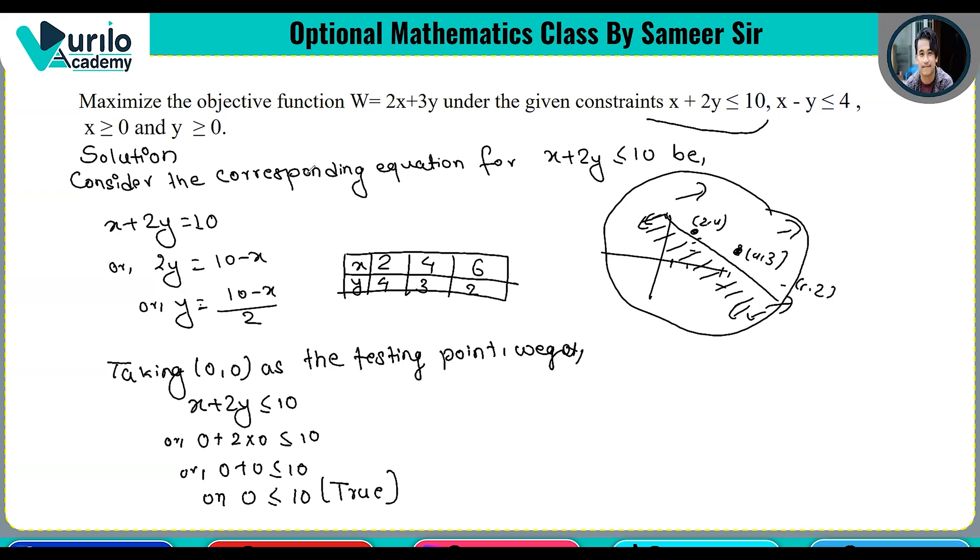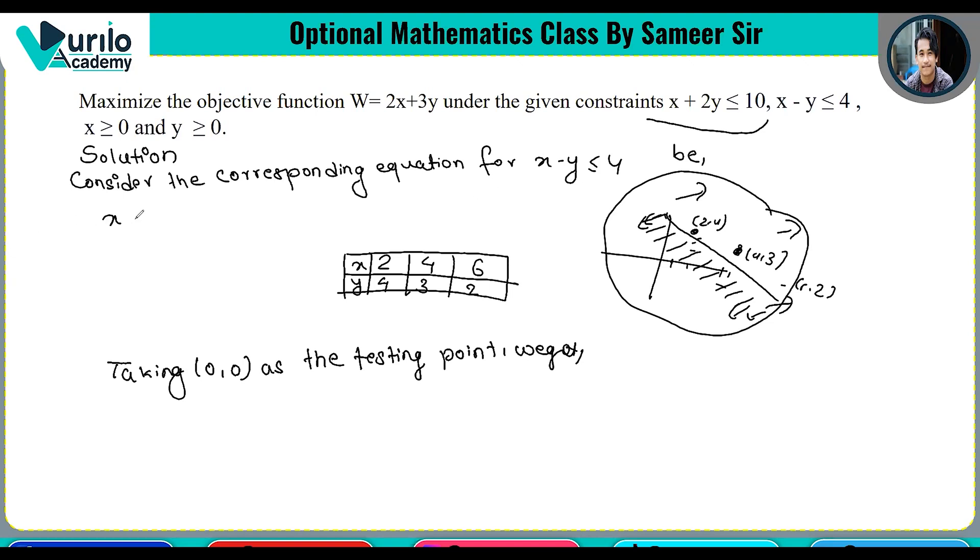Now let's do the same for the second constraint: x minus y is less than or equals to 4. The corresponding equation is x minus y equals 4, which we can rewrite as y equals x minus 4.